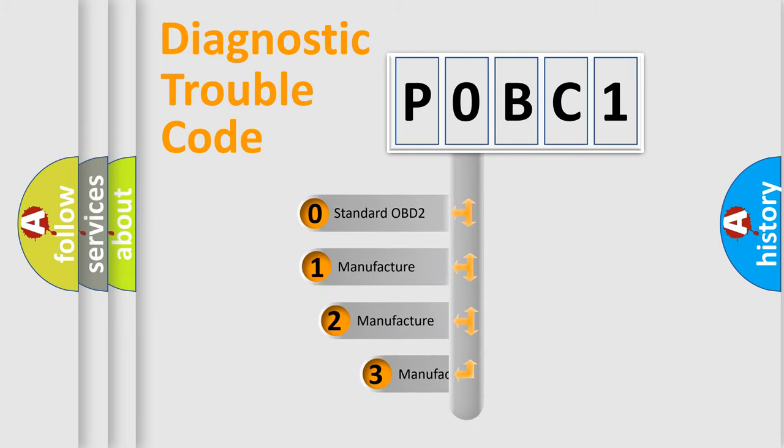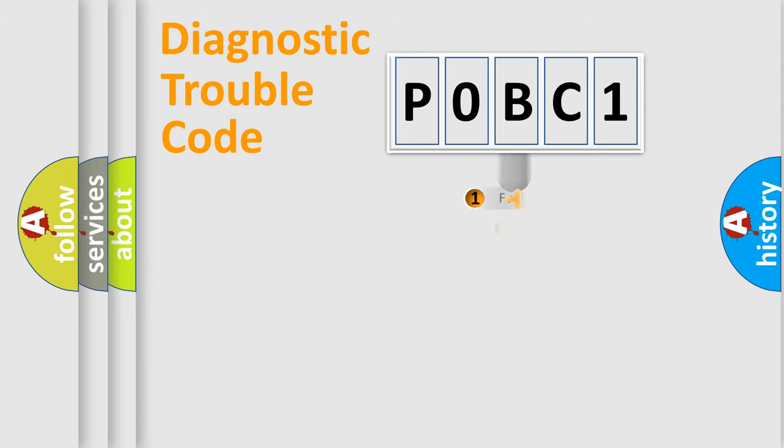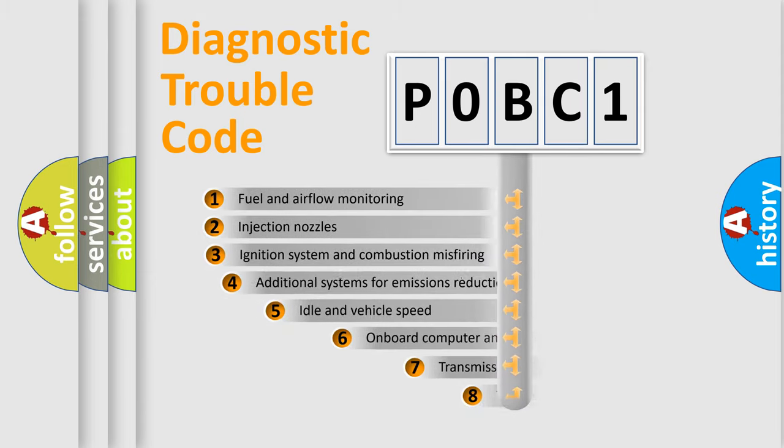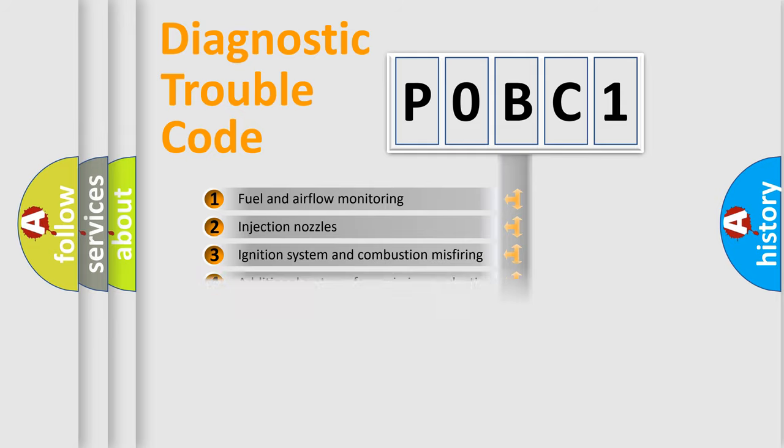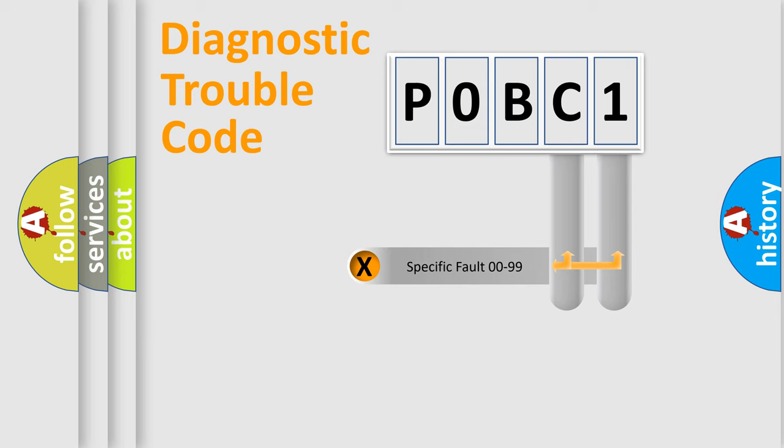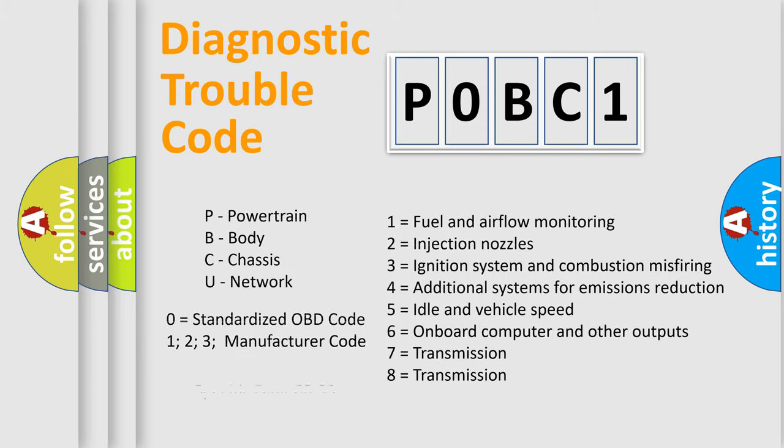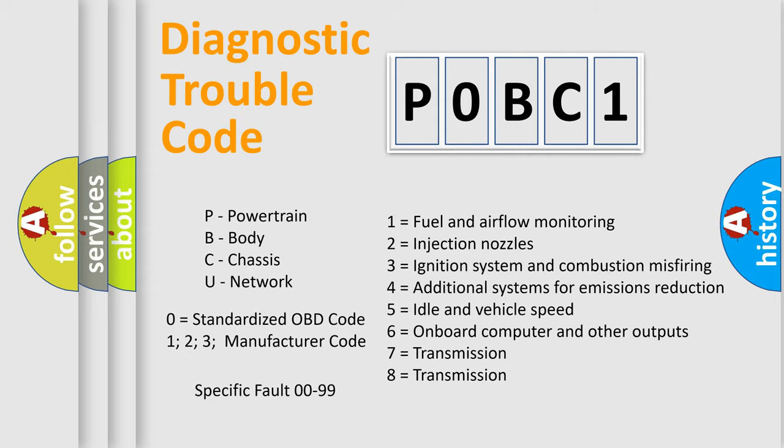If the second character is expressed as zero, it is a standardized error. In the case of numbers 1, 2, or 3, it is a more specific expression of the car-specific error. The third character specifies a subset of errors. The distribution shown is valid only for the standardized DTC code. Only the last two characters define the specific fault of the group. Let's not forget that such a division is valid only if the second character code is expressed by the number zero.